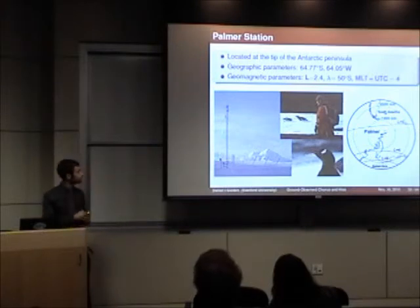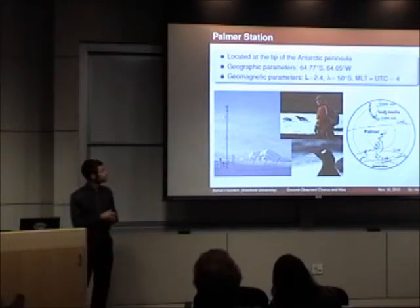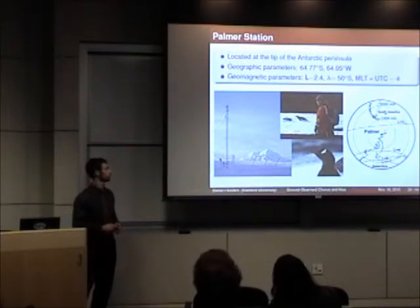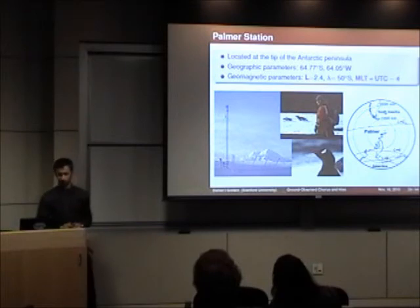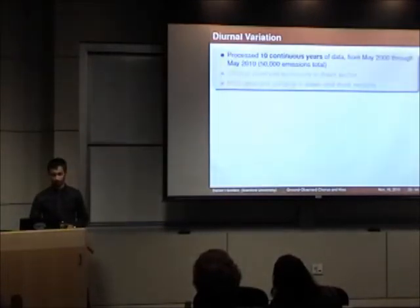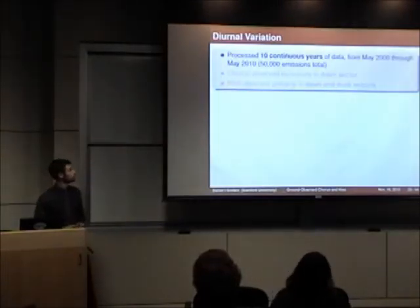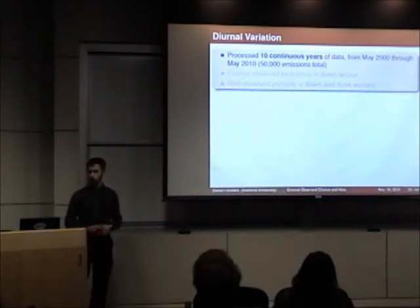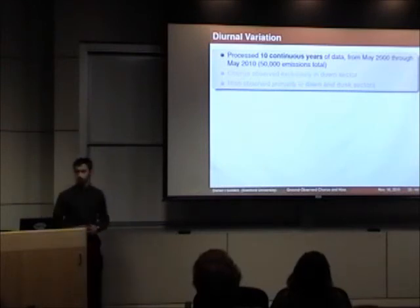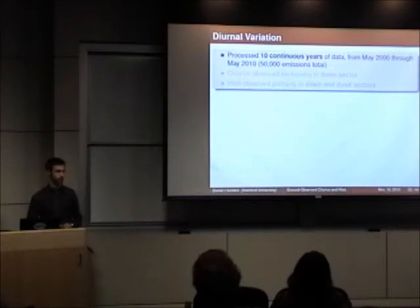Shown here is the Palmer antenna, located on the Anvers Island Glacier. For this first study, we processed 10 continuous years of data from May 2000 through May 2010, and detected a total of 50,000 emissions, which would be quite a task to do manually.